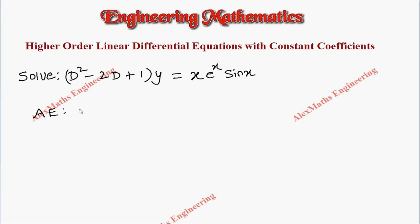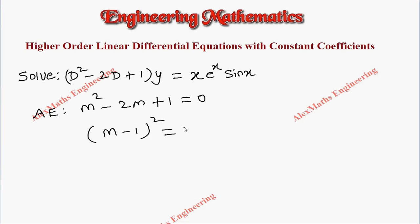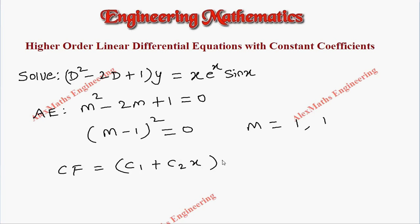We write the auxiliary equation as m² - 2m + 1 = 0, which factors as (m-1)² = 0. From this we get two equal values for m, both equal to 1. The complementary function is therefore CF = (c1 + c2·x)·e^(1·x), since m = 1.